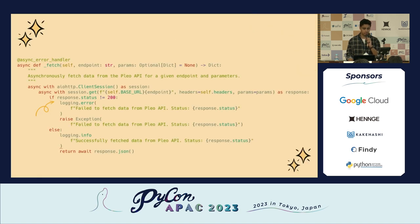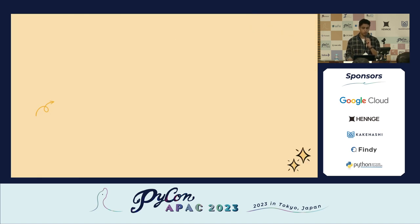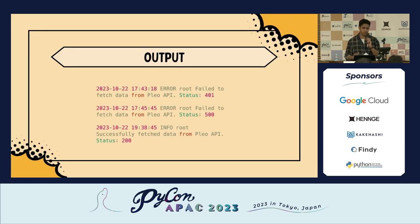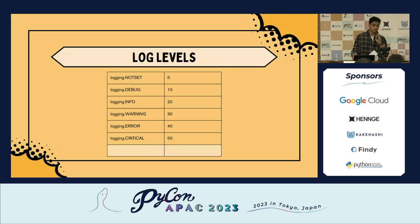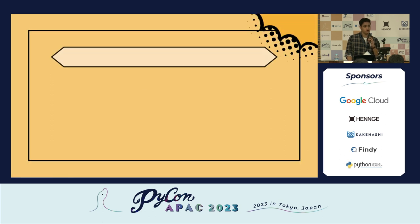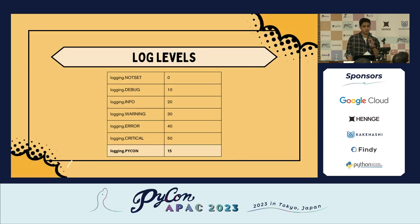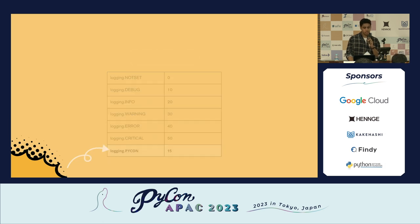If we use that configuration and run the function, we get output — a pretty simple output showing the error and the info messages. The second thing is log levels in Python. Every log level is associated with a value — not set, debug, info, and so on. We can also create our own log levels. For example, we can create a PyCon level associated with a value of 15, which is just ahead of the debug value.